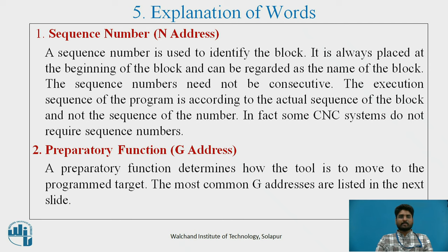We are going to see what sequence number and preparatory function are. Sequence number, also called N address, is used to identify the block. It is always placed at the beginning of the block and can be regarded as the name of the block. Sequence numbers need not be consecutive. The execution sequence of the program is according to the actual sequence of the blocks, not the sequence of the numbers. In fact, some CNC systems do not require sequence numbers. Second, preparatory function uses G addresses. A preparatory function determines how the tool is to move to the programmed target. The most common G addresses are listed in the next slide.